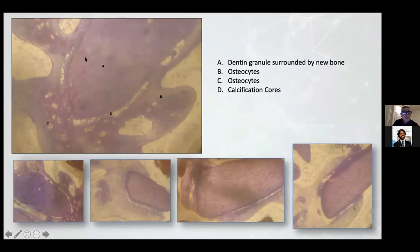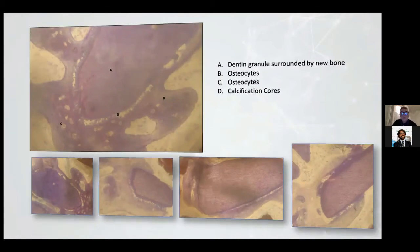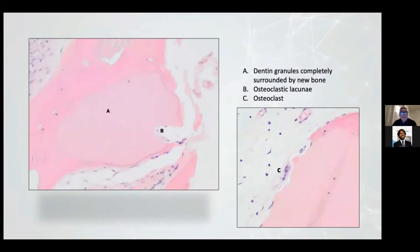This shows the ability of dentine to be osteoconductive. When the dentine becomes osteoinductive, the osteoclast eats the dentine and frees the proteins. We have this very interesting image with the granule completely surrounded by new bone.